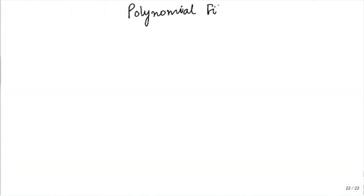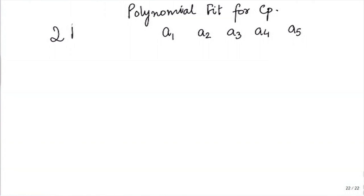What we had was a polynomial fit for Cp, and what you have been given are constants a1, a2, a3, a4, a5 in two ranges. So this is just a pure polynomial from which you will get Cp.